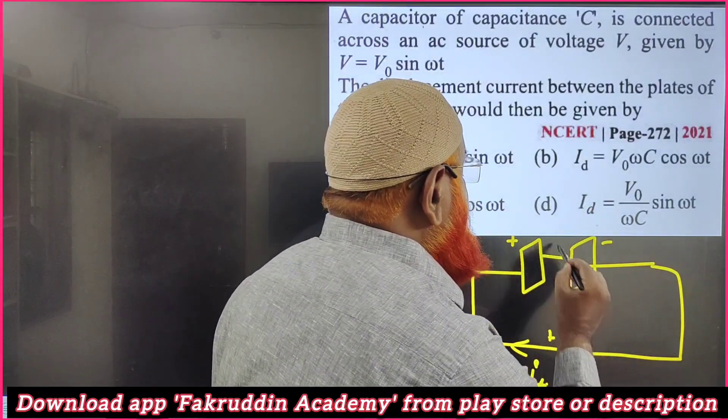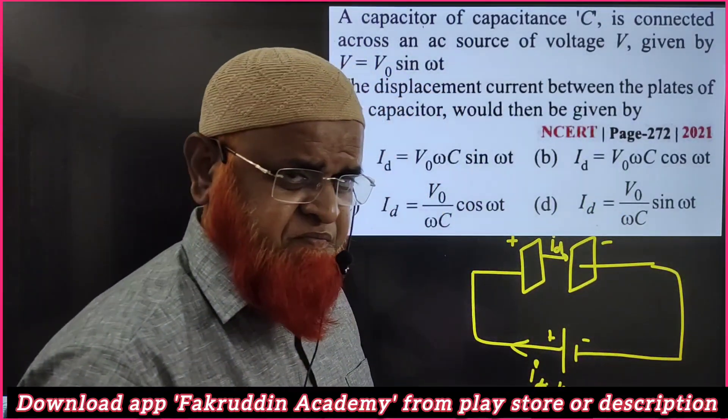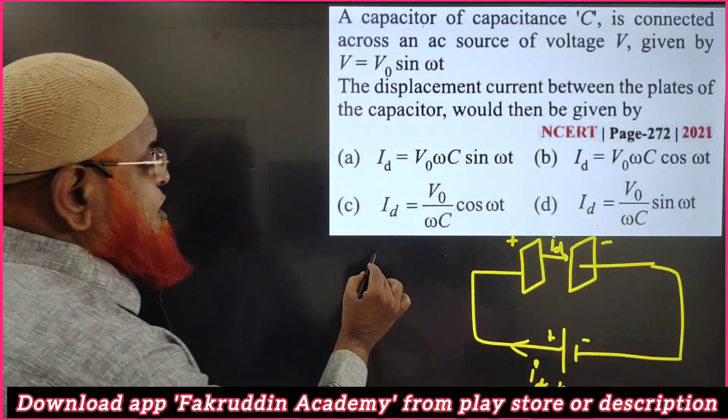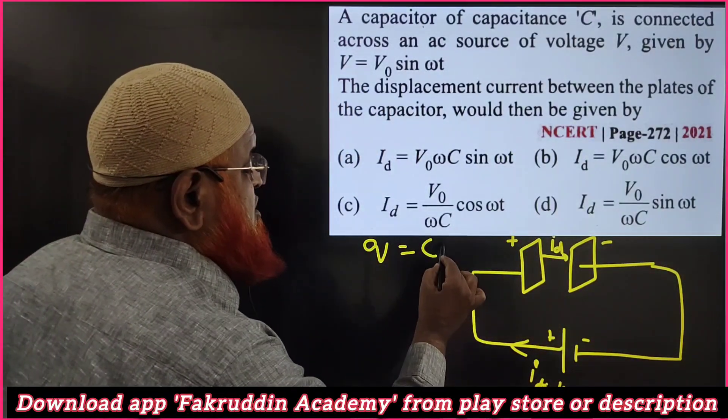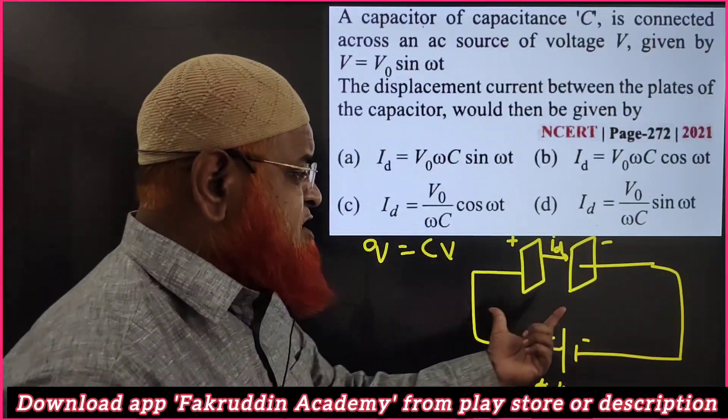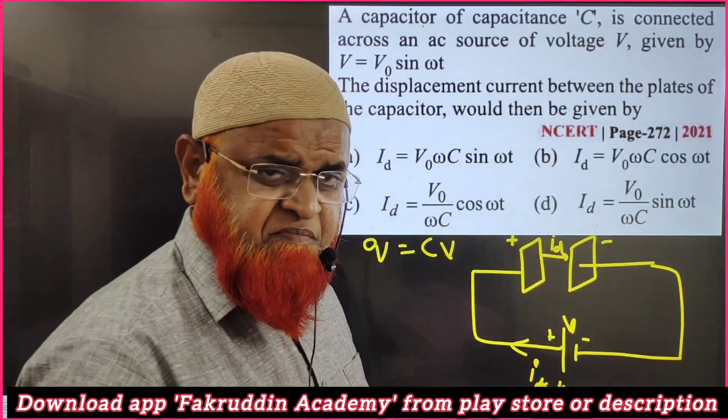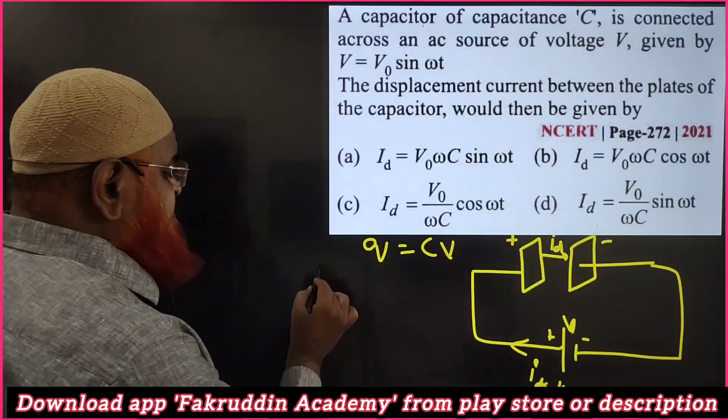This displacement current we have to find out. This is a concept of a capacitor. You know in a capacitor, charge is equal to capacitance into potential difference, Q = CV, which is connected here.